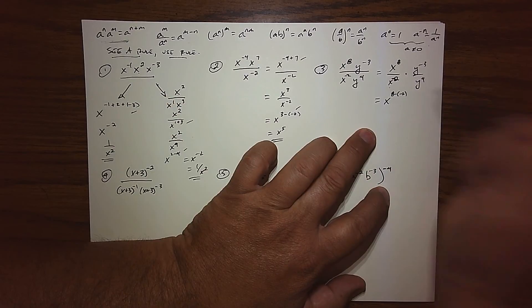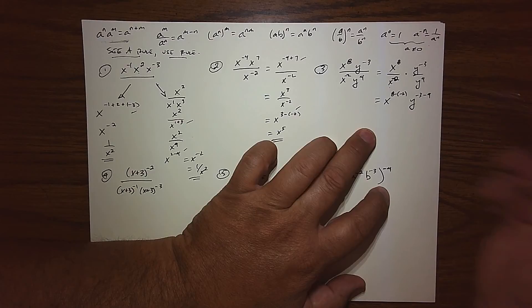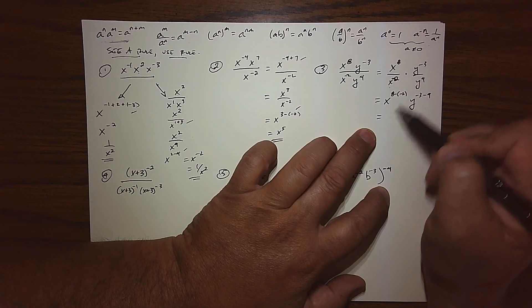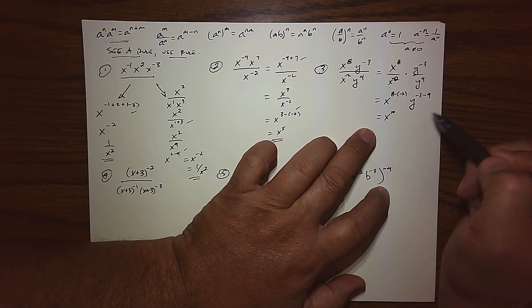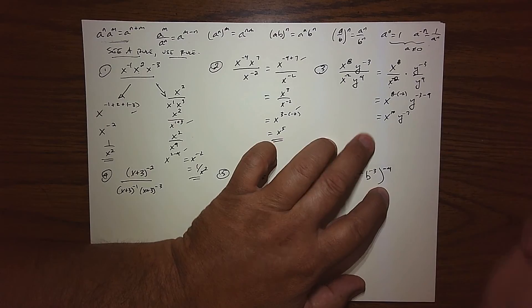And this is y, negative 3, minus 4, top minus bottom. So when I subtract a negative, it's adding the opposite. So this is x to the tenth. And negative 3 take away 4 is y to the negative 7.